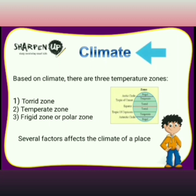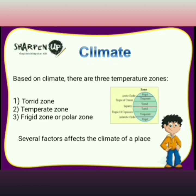Now let's discuss climate. The average weather pattern at a place taken over a long period of time — say 25 years — is called the climate of that place. The climate of a place is determined by its latitude.